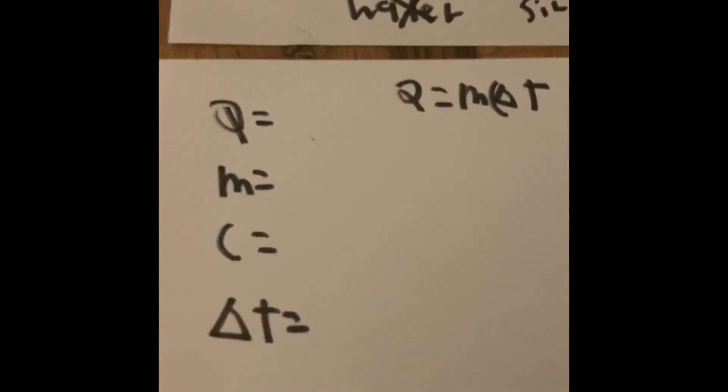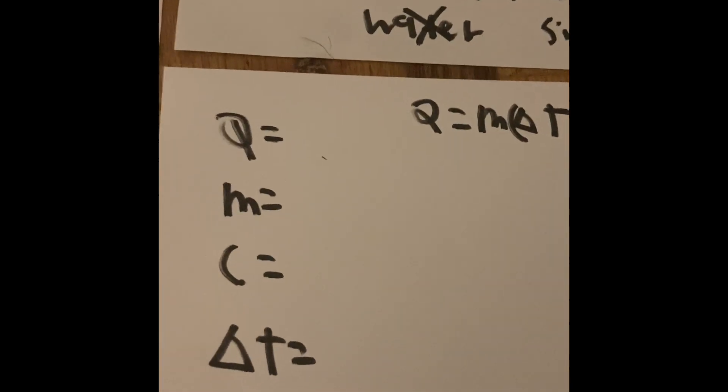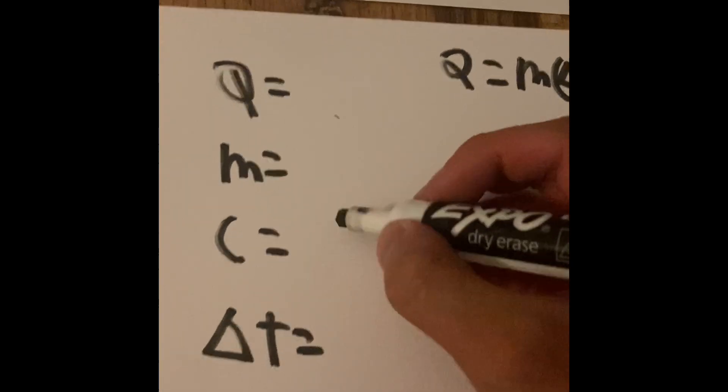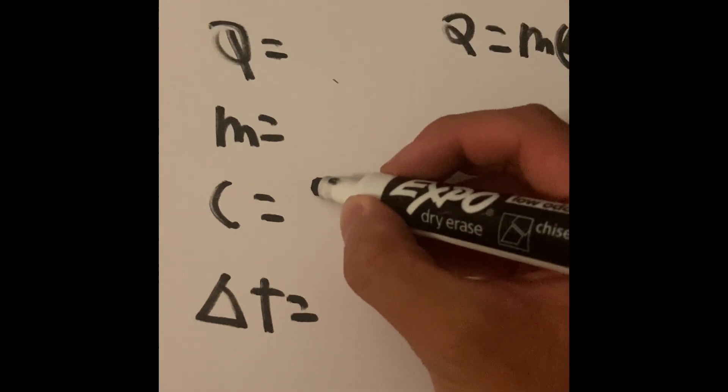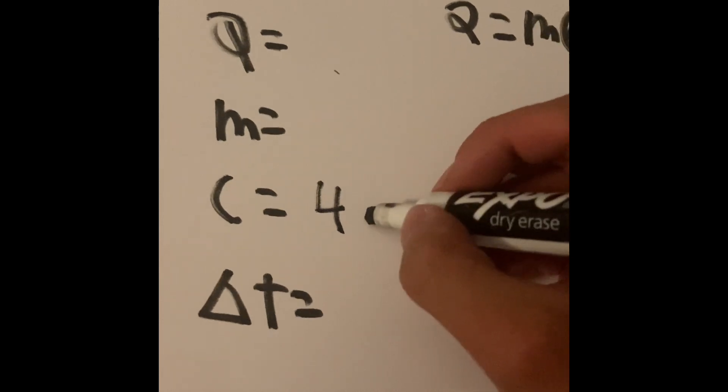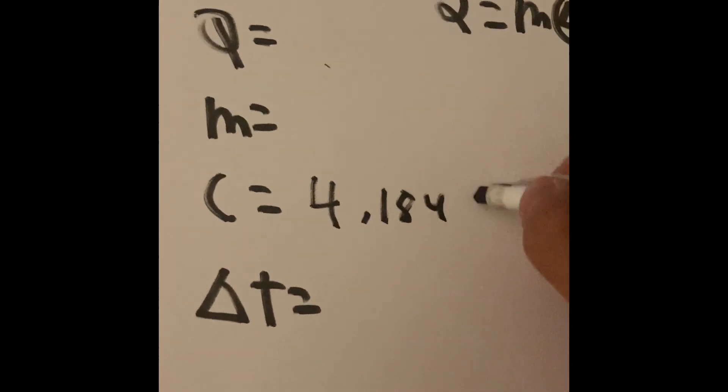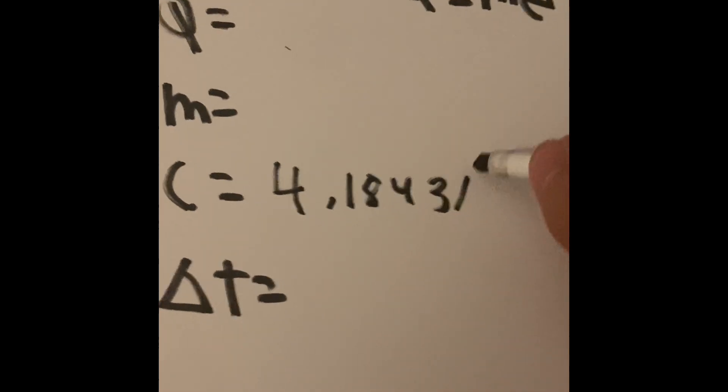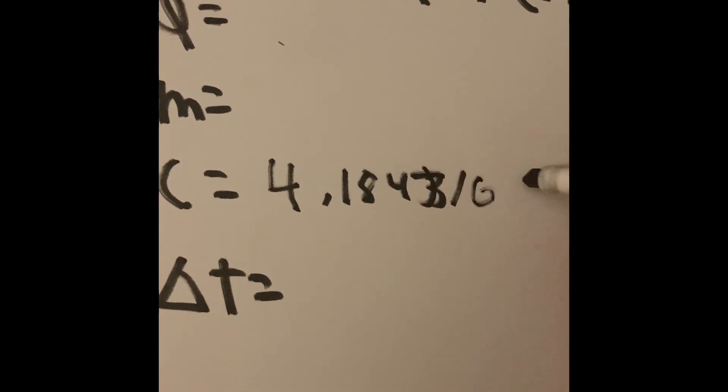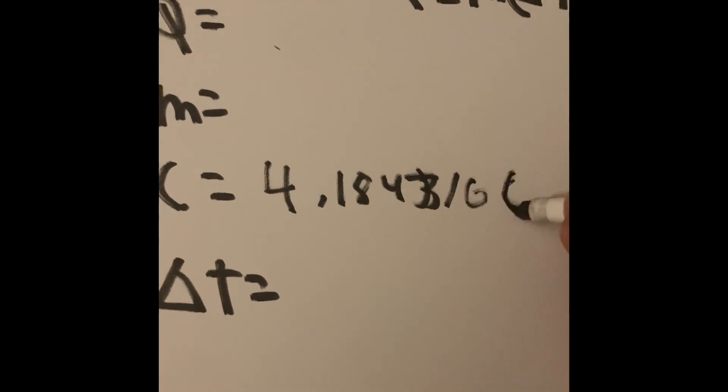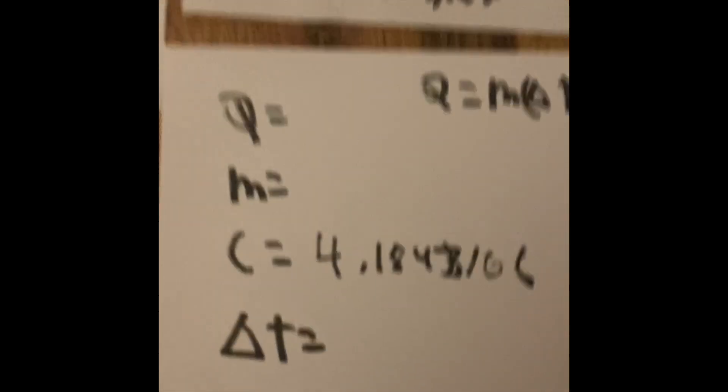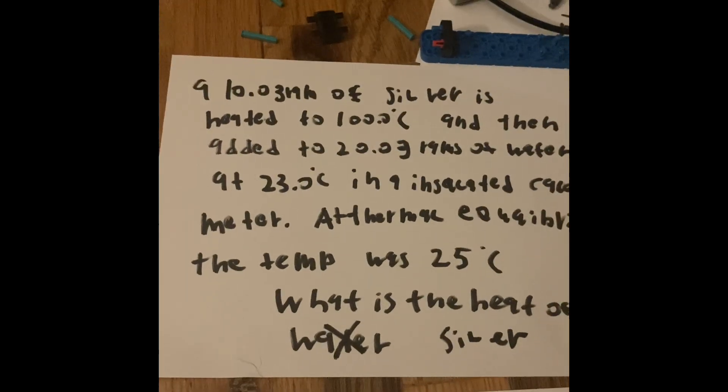When the problem says water, the first thing you might want to think about is the specific heat. So 4.184 joules per gram per Celsius. That's going to help us, because everything is measured in grams and Celsius.